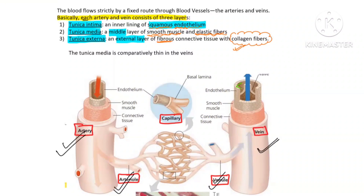So to summarize, only three types of layers are present: tunica intima — squamous endothelium; tunica media — smooth muscles and elastic fiber; and tunica externa — connective tissue, specifically collagen fiber.